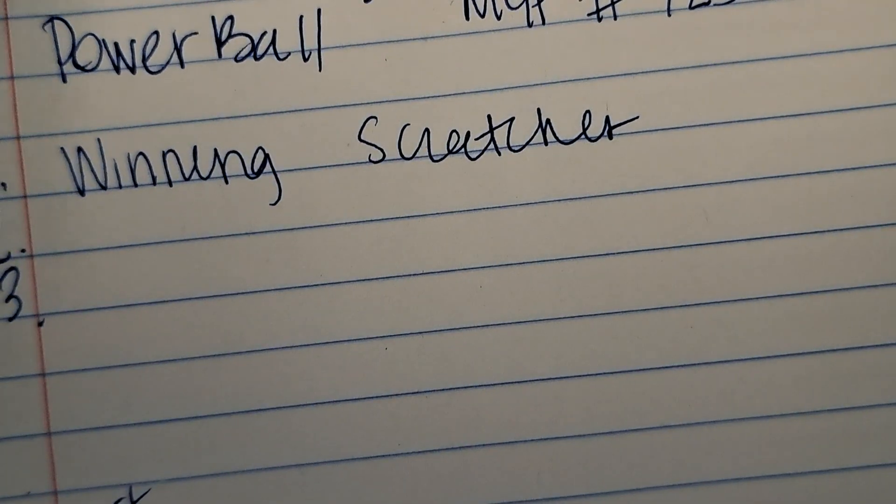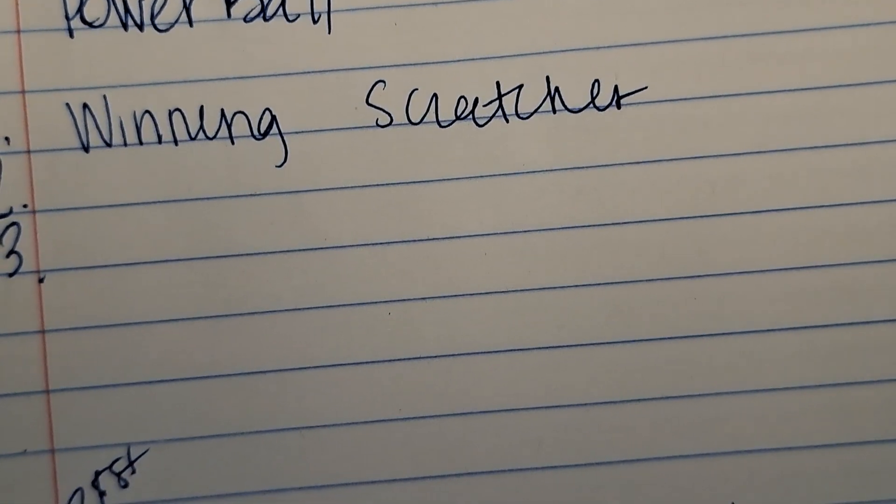So, it is 30, 30 and 20. Well, 30 for Powerball and 20 for Texas Lotto.